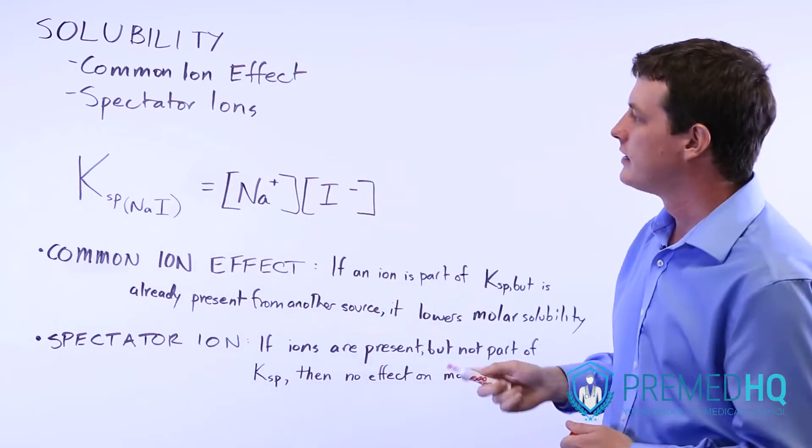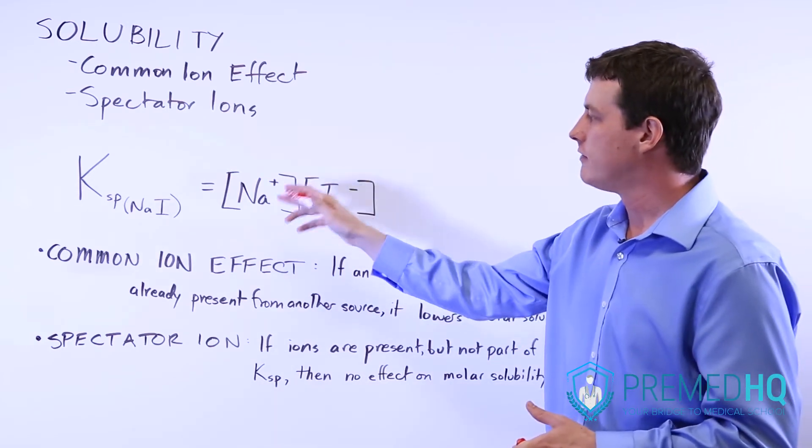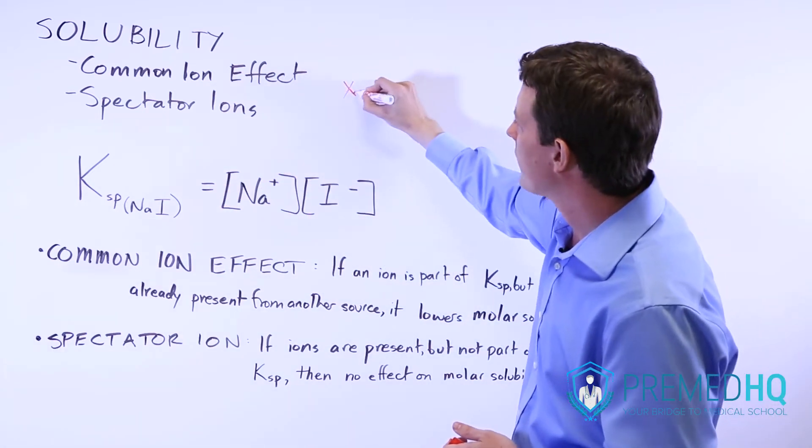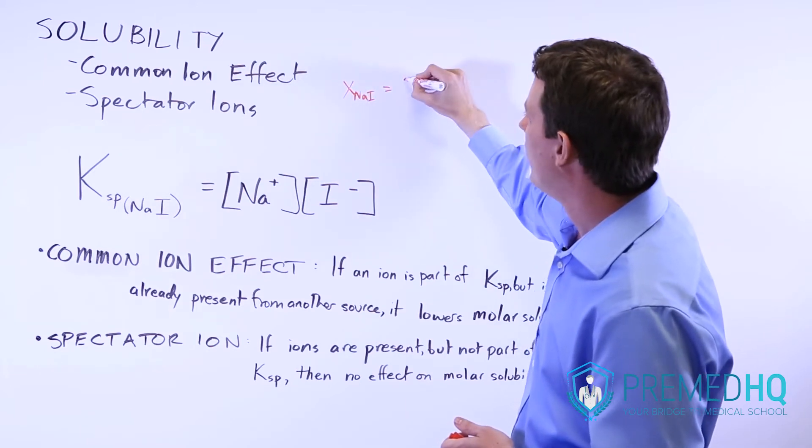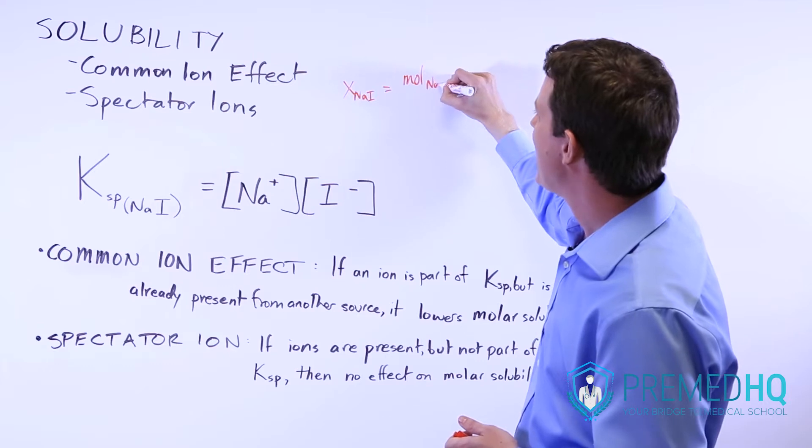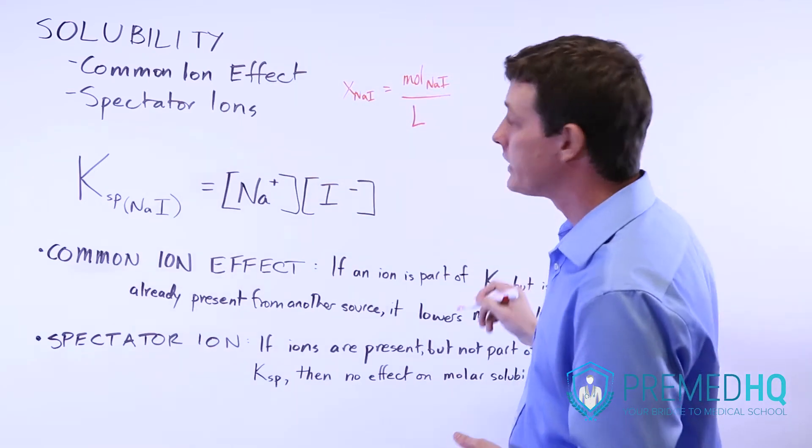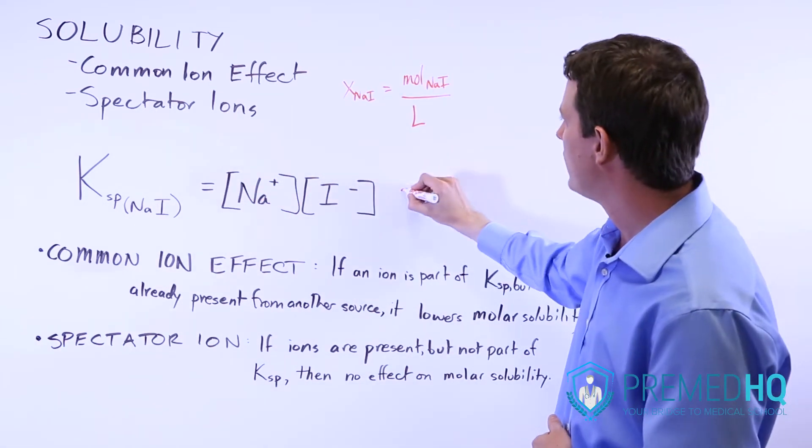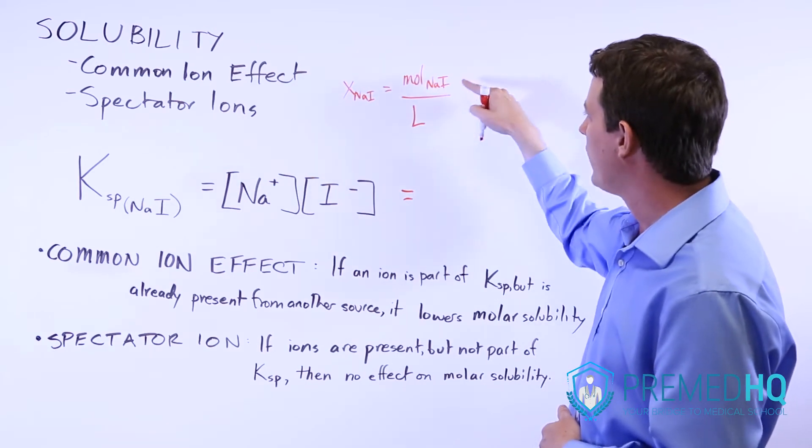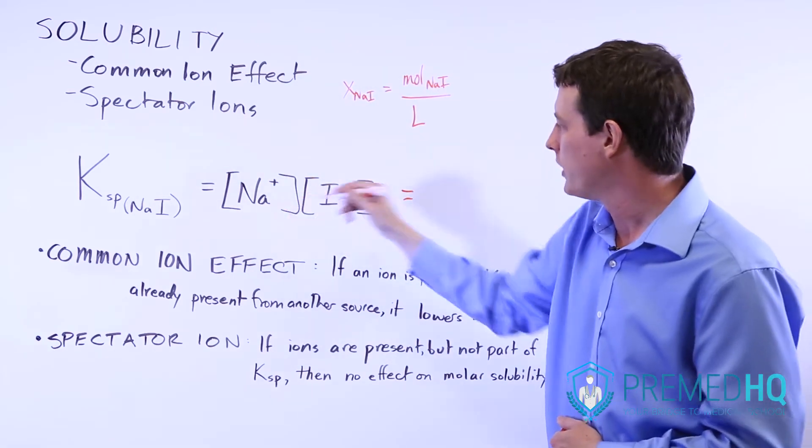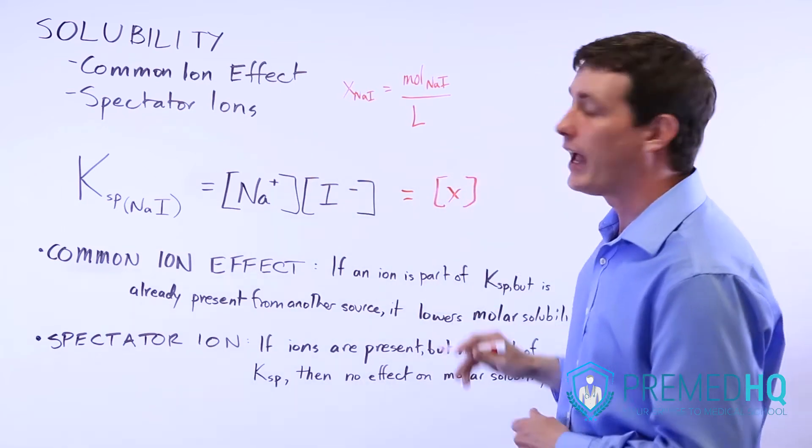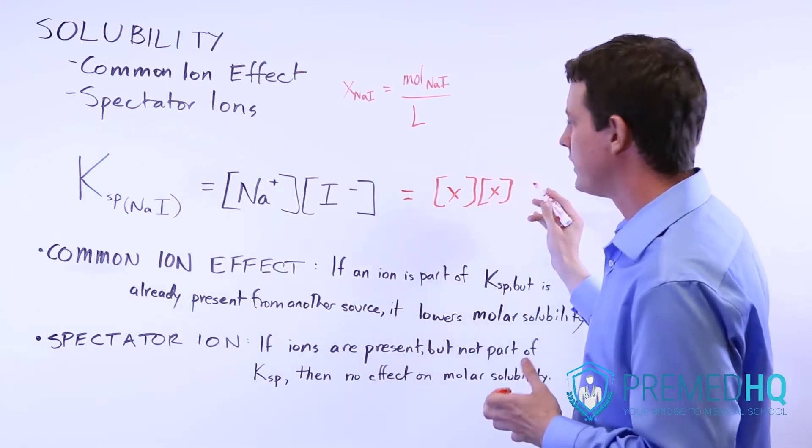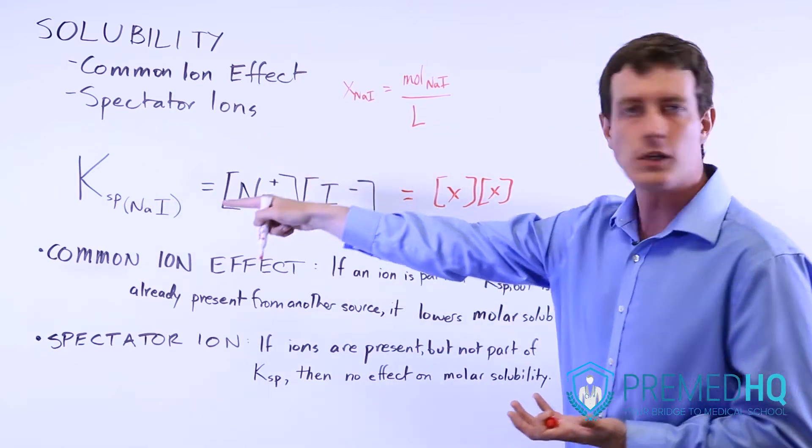And the reason for that is if we're looking at the molar solubility of sodium iodide and relating that to KSP, normally what happens is that X of NaI is the amount of moles of NaI that you can add per liter. And so if we're converting from molar solubility to KSP, what we'll end up with here is for every mole of NaI that you have, that dissolves into one sodium, so that'll just be X here. And it dissolves into one iodine ion, so that'll just be another X here. And what you'll end up with is X squared equals KSP.